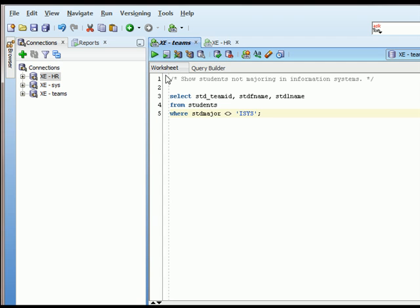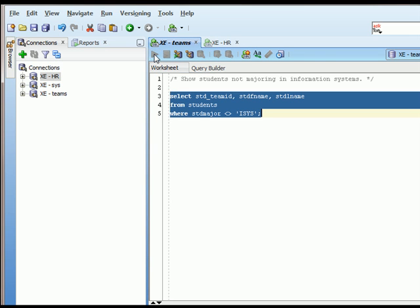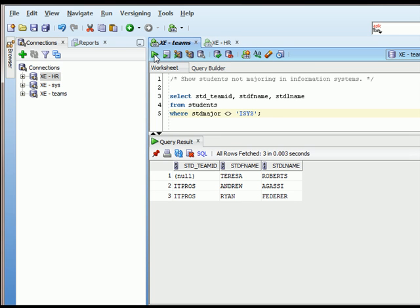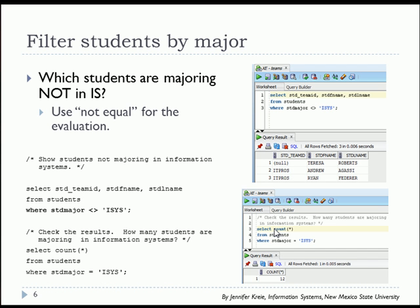I've copied in the syntax, the SQL command, and now I'll run the command. We see a list of three people who do not have a major designated as information systems.